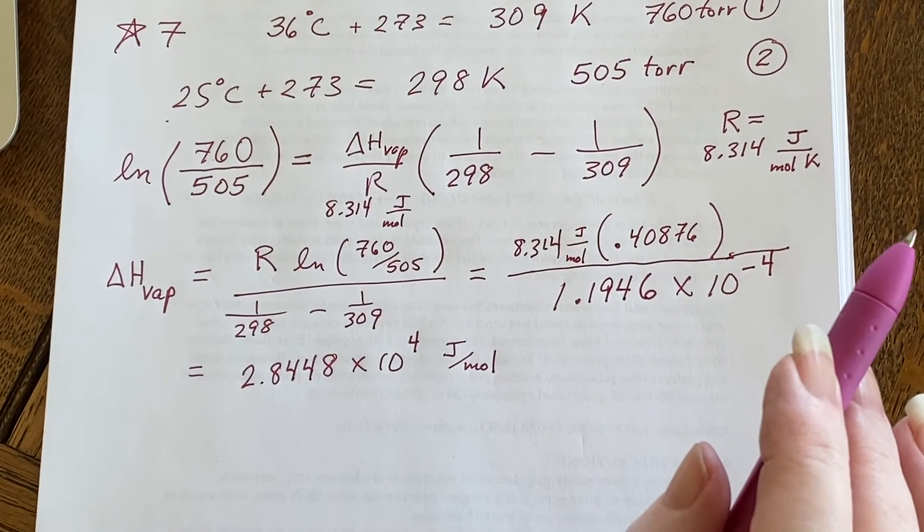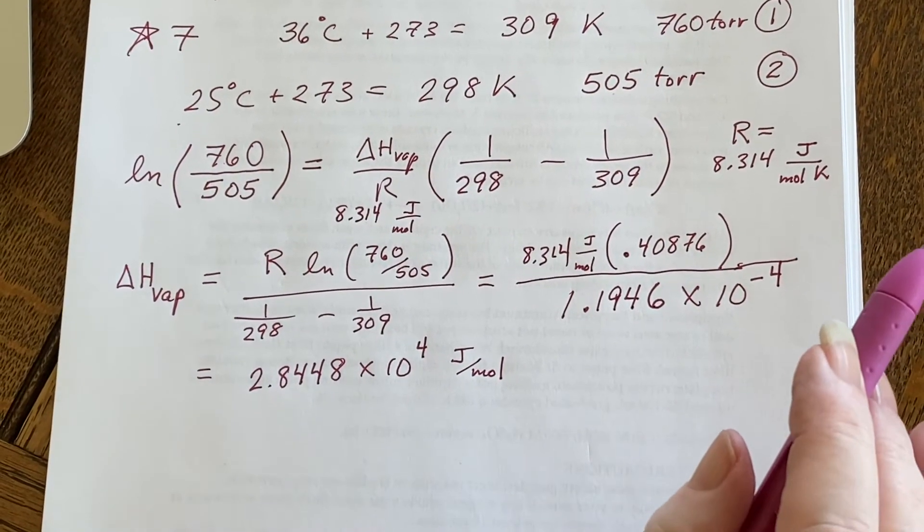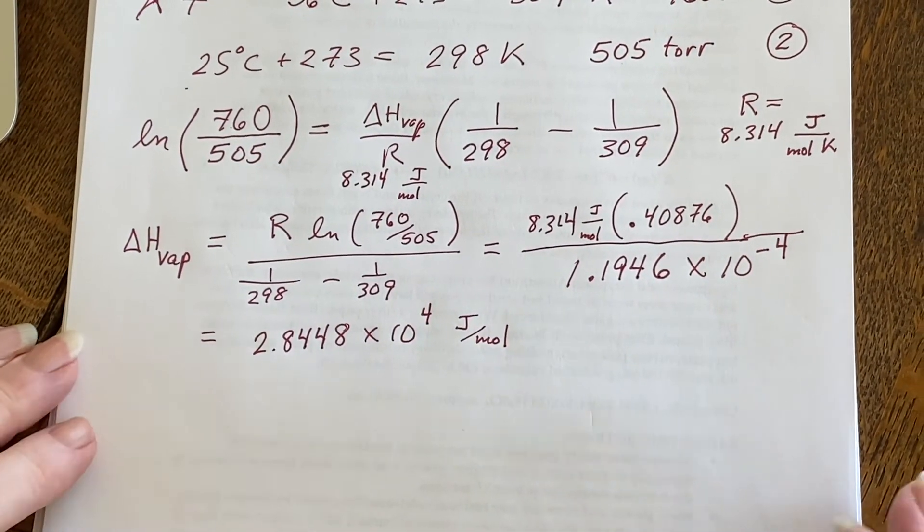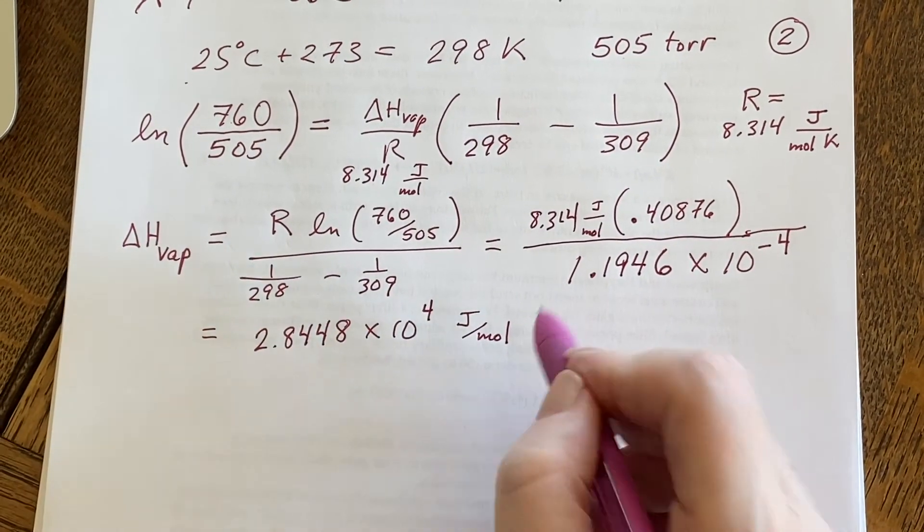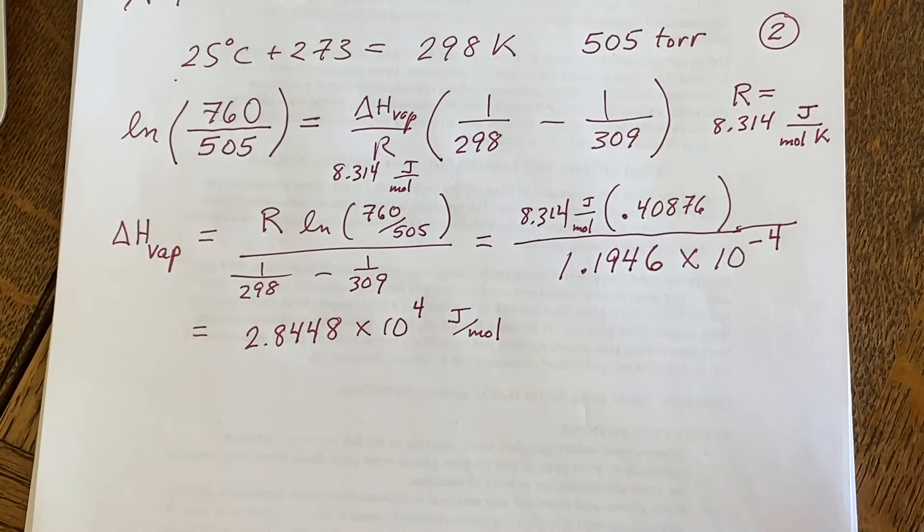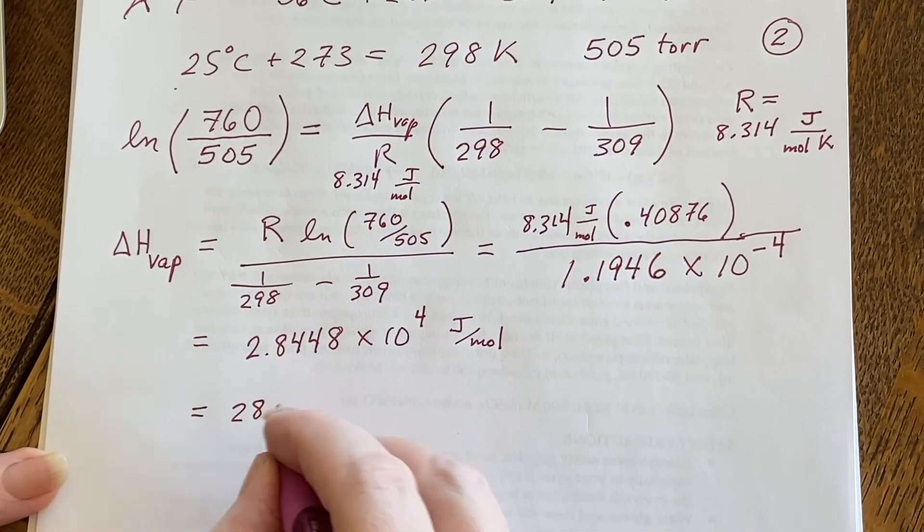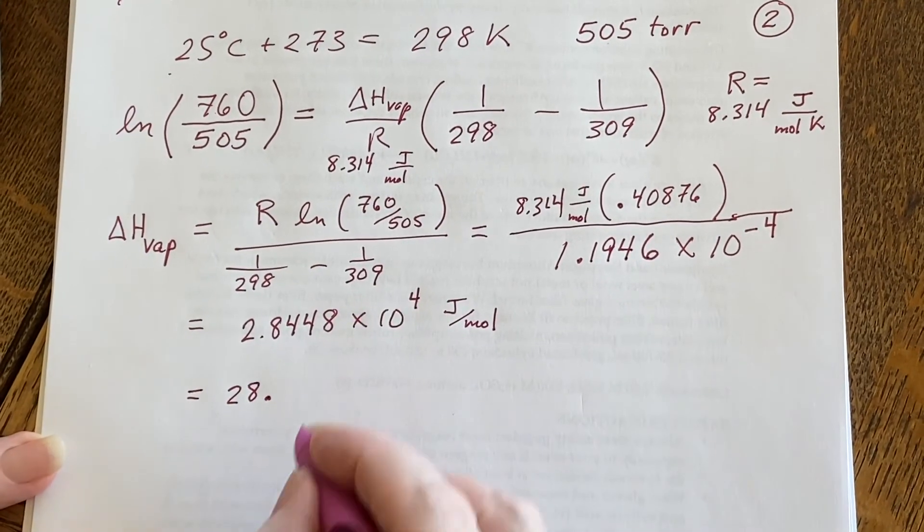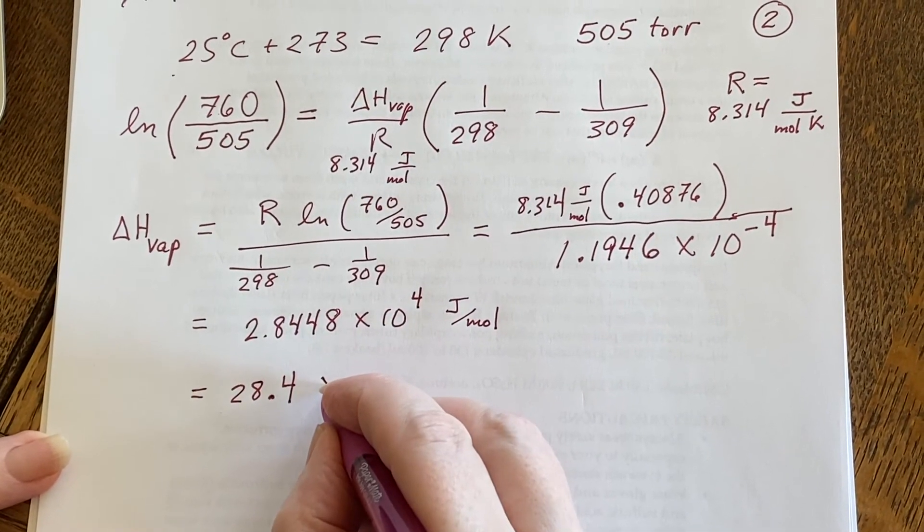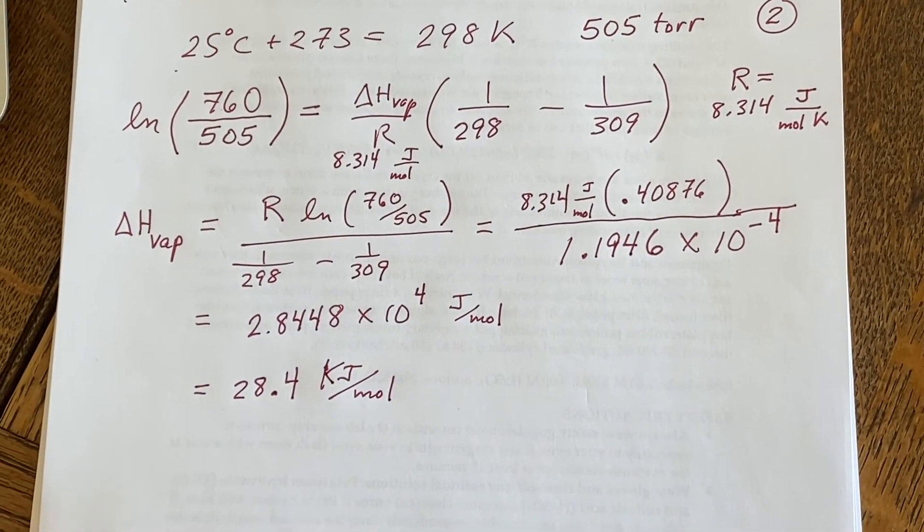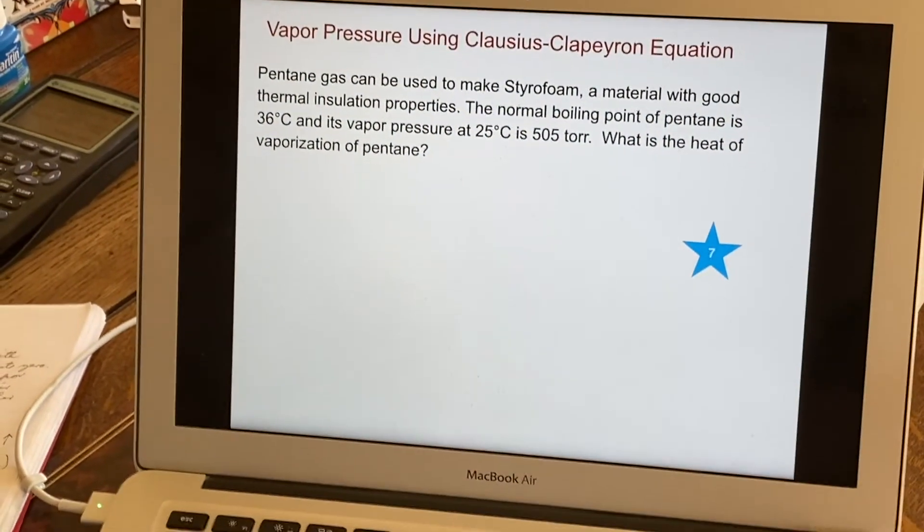But I said usually these things are written as kilojoules per mole when we're talking about delta H of vaporization. Enthalpy of vaporization is usually written in kilojoules per mole. Well what does kilo mean? It means 10 to the third. So if we think about that and we remember that we needed to take this back to three sig figs, we would end up saying that this was 28.4 kilojoules per mole. And we are finally done with the problem.